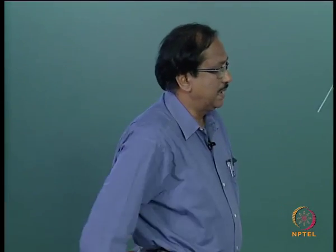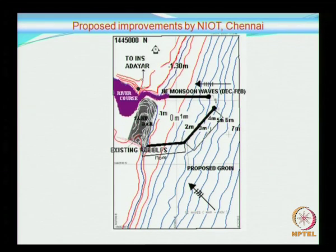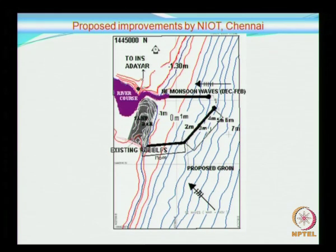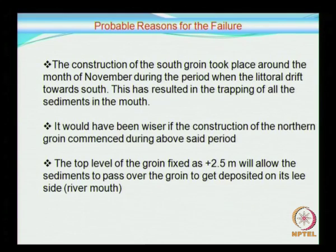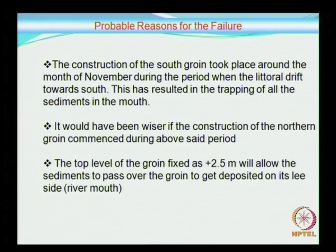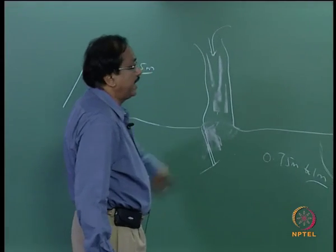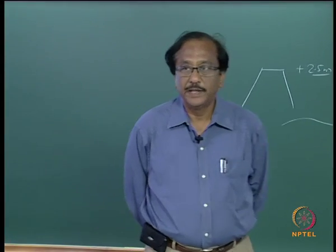There was also an additional protection measure suggested by NIOT — the National Institute of Ocean Technology — which had an arm-like extension, though it did not go through. In spite of this, the construction of the southern training wall took place around the month of November.